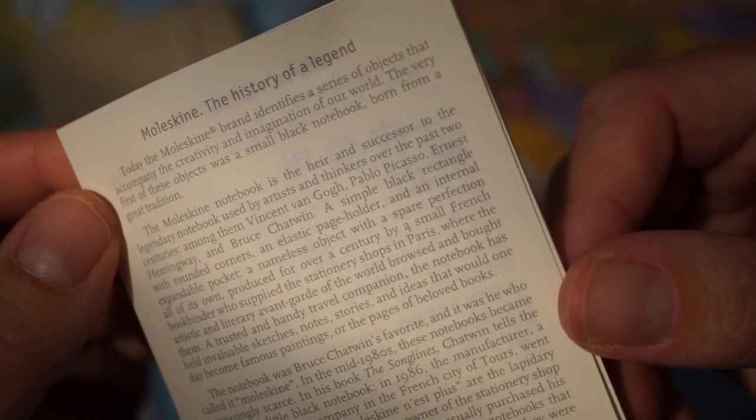We can do some name dropping. We see Vincent van Gogh, Pablo Picasso. The brand has been purchased in 1997 by an owner in Milan in Italy. And you can find more on the website.